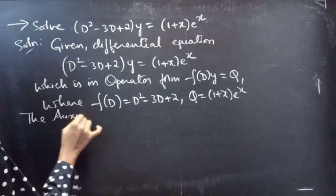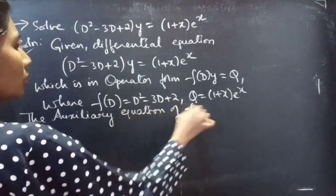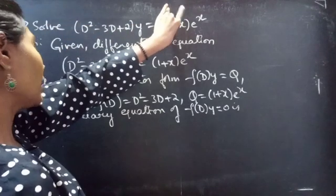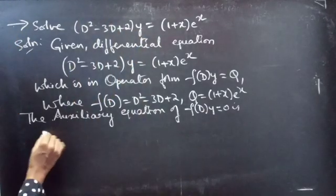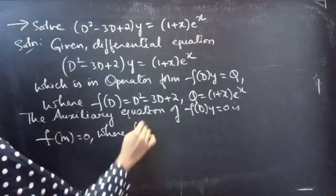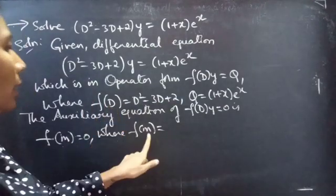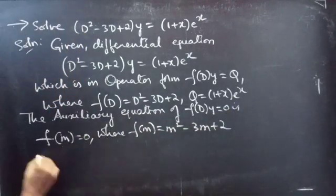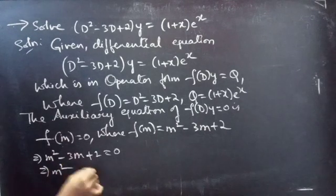The auxiliary equation of f(D)·y = 0 is obtained by replacing D with m. We have f(D) = D² - 3D + 2, so replacing the differential operator with m gives f(m) = m² - 3m + 2. Our auxiliary equation becomes m² - 3m + 2 = 0.